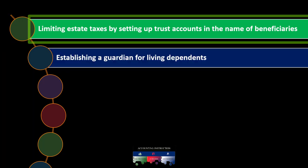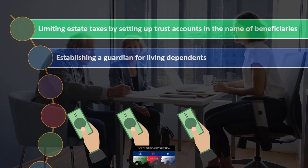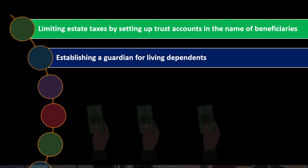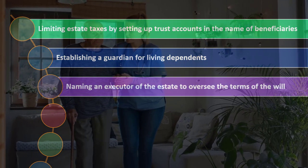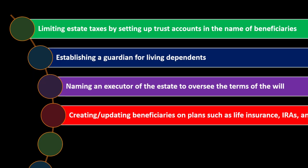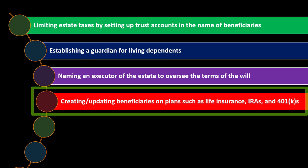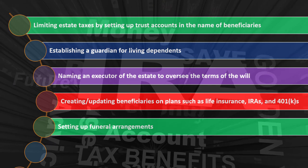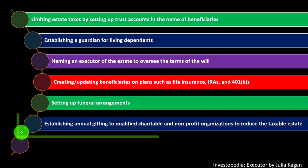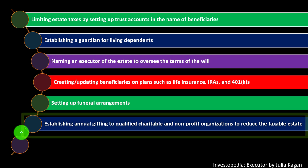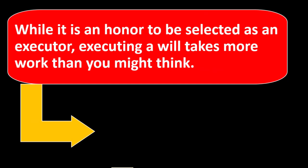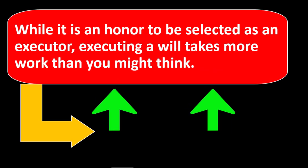Other major estate planning tasks include limiting estate taxes by setting up trust accounts in the name of beneficiaries, establishing a guardian for living dependents, naming an executor to oversee the terms of the will, updating beneficiaries on plans such as life insurance, IRAs, and 401(k) plans, setting up funeral arrangements, and establishing a durable power of attorney to direct other assets and investments.